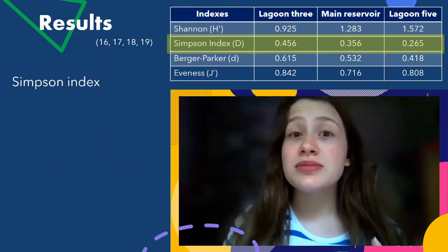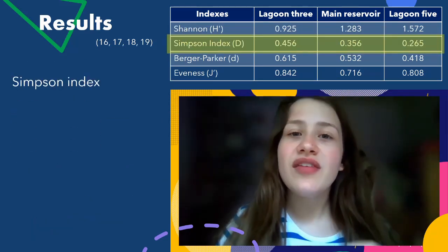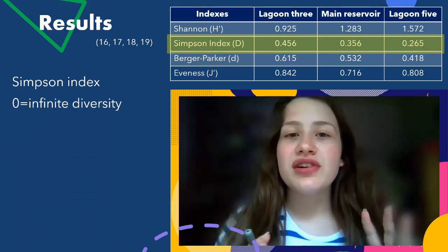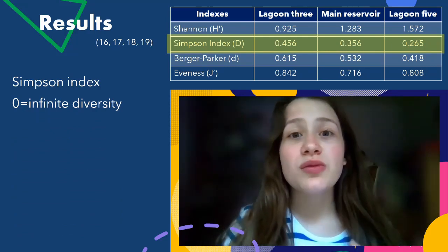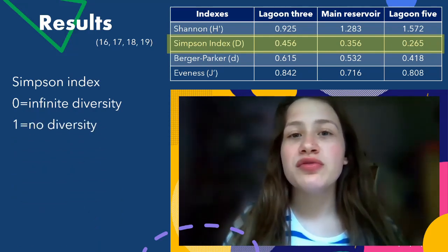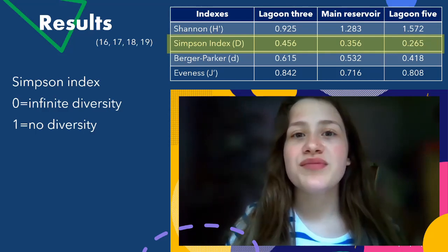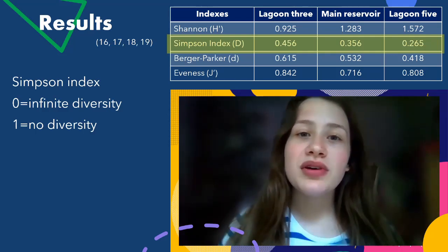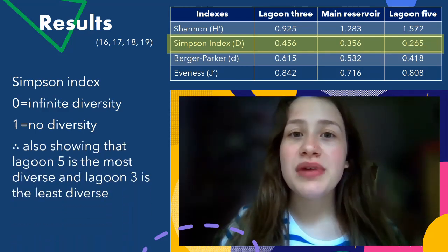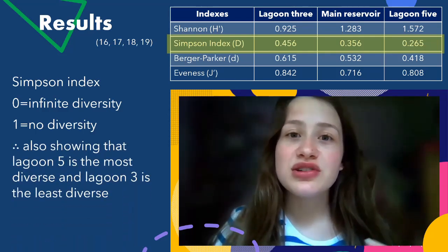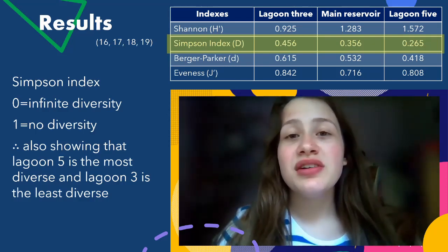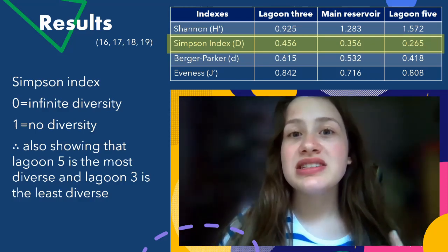Next up, the Simpson's Index. A value of 0 means infinite diversity, whereas a value of 1 means no diversity, so you're aiming for a lower value for more diversity. Lagoon 5 has the smallest value, making it once again the most diverse, whereas Lagoon 3 has the greatest value, making it the least diverse. The main reservoir falls in between the two.